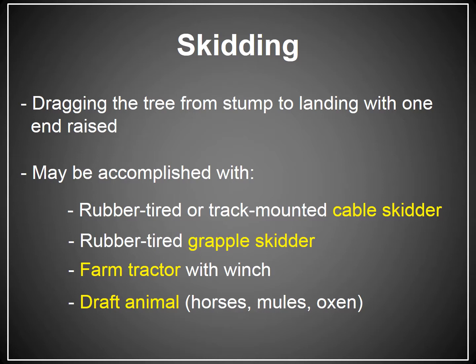Skidding refers to dragging the severed tree from the stump to the landing with one end raised — the butt end of the log is suspended and the top end drags along the ground. Skidding can be accomplished with a rubber-tired or track-mounted cable skidder, a rubber-tired grapple skidder, a farm tractor with a winch, or draft animals. As we saw with Ian's picture, horses, mule teams, or even teams of oxen can be used to pull logs out.